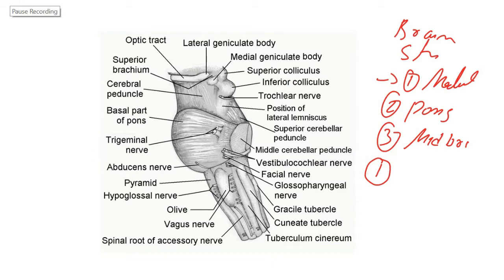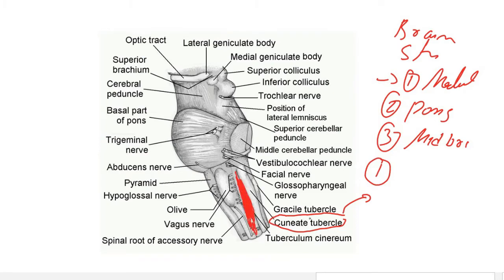Before starting the external features, take note that a tubercle is an elevation. For example, the cuneate tubercle is an elevation caused by the cuneate nucleus lying all along the medulla. We will discuss the cuneate nucleus in the internal structure section.